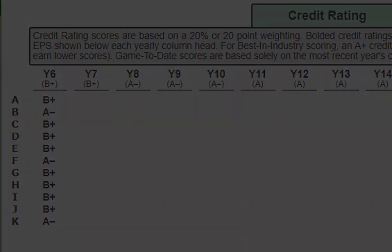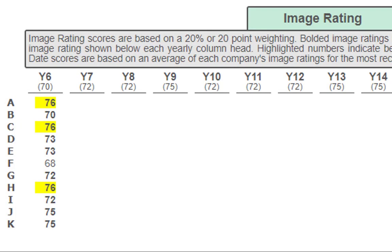Moving on to image rating, it looks like everyone's meeting expectations. We have a three-way tie for best, which is teams A, C, and H — great job. It looks like everyone kind of has a handle on it. Team F, I'm sure you'll get it together by year eight or nine — no worries, as long as you continue moving forward. That's what I'll be looking at.